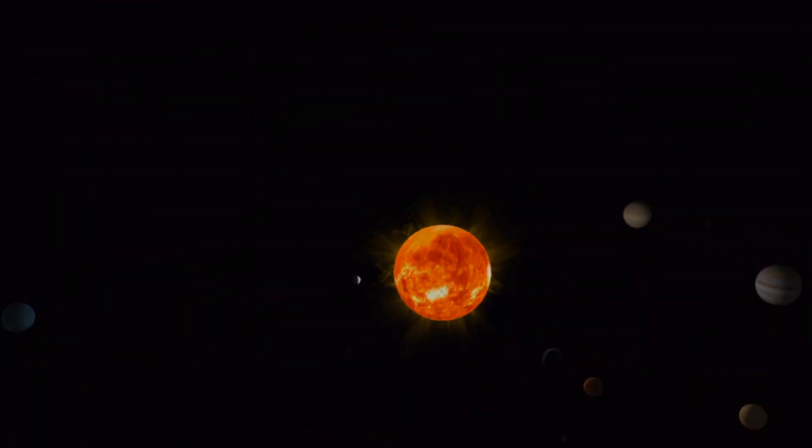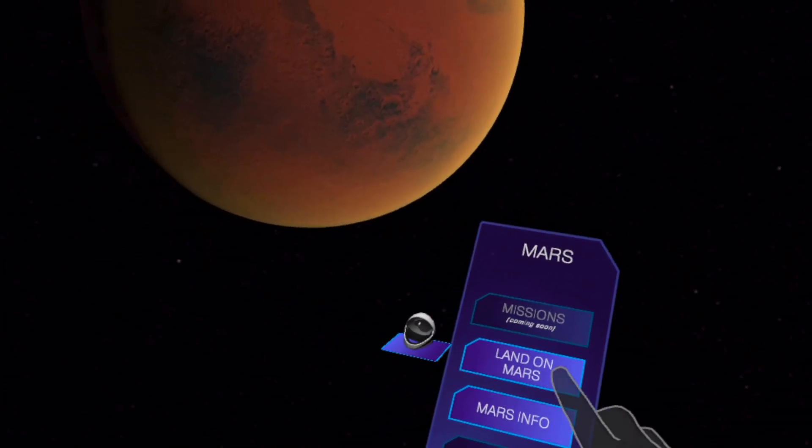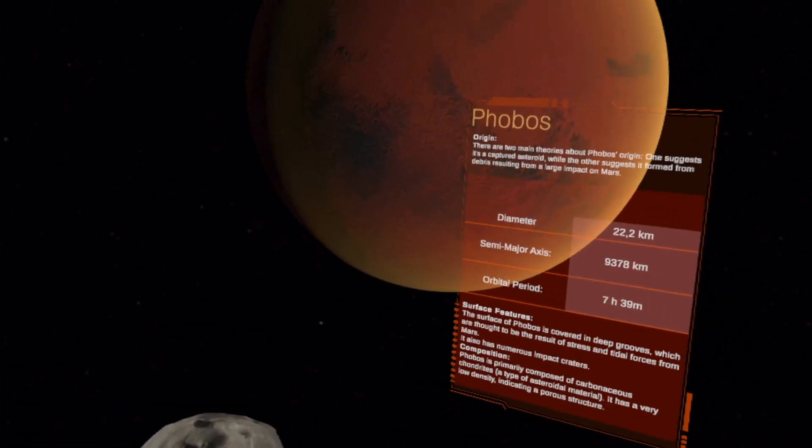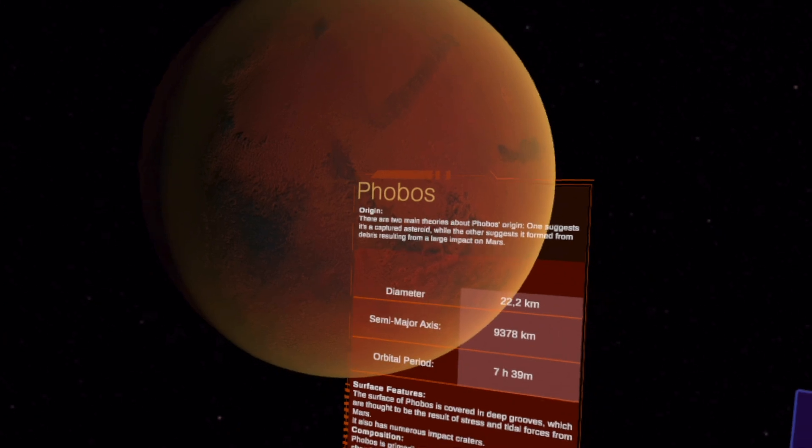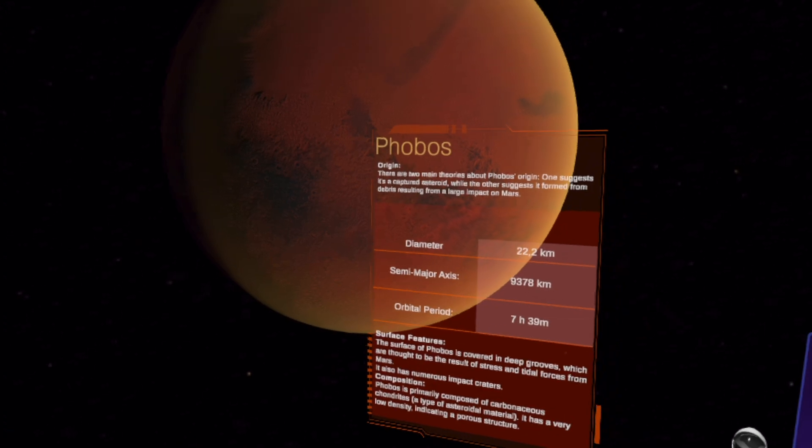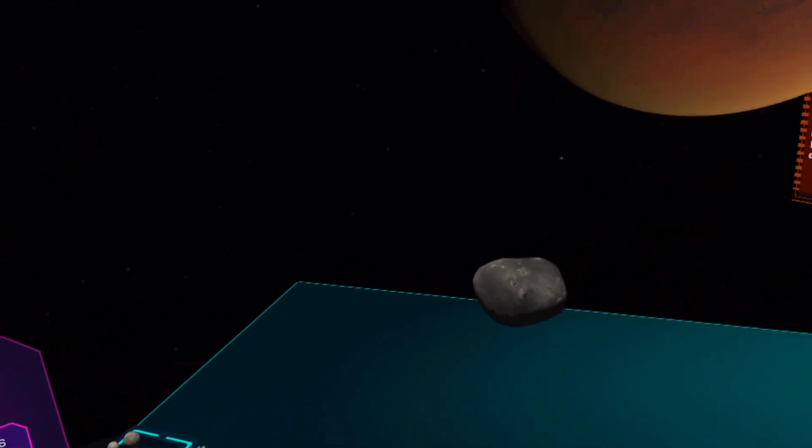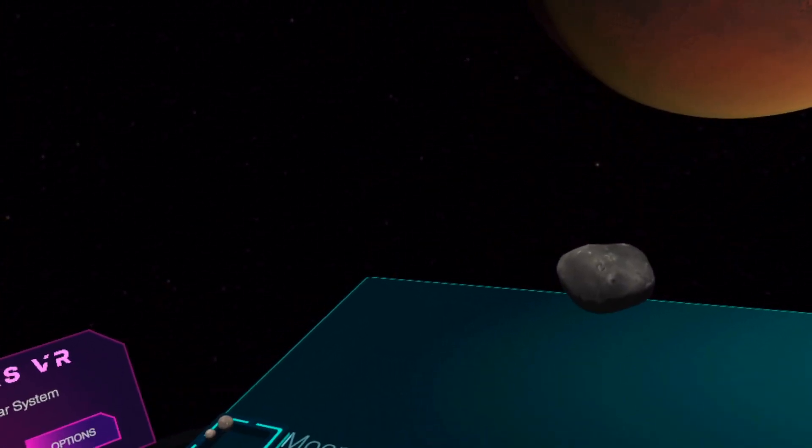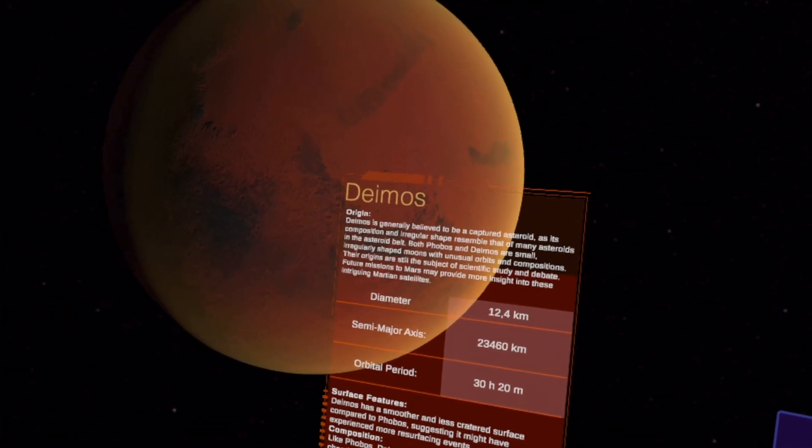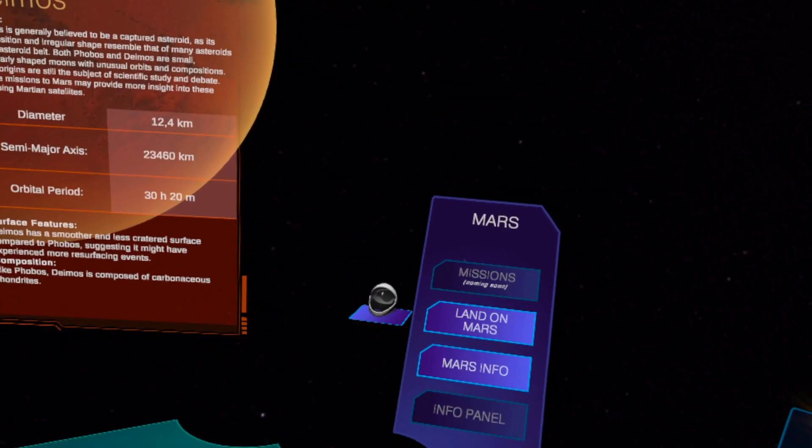Mars, it's a quick tour of the planetary system. Mars info, the moons. Phobos - it's not actually a moon, it's an asteroid caught by the gravity, only 22 kilometers. The other moon, Deimos. Phobos means fear and anxiety or something like that. Very small, irregularly shaped moons with unusual orbits and compositions, so they're not actually moons.